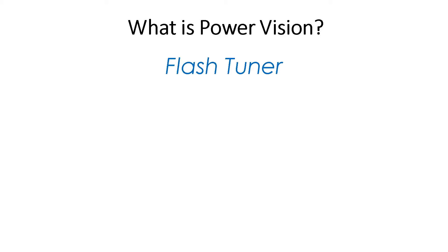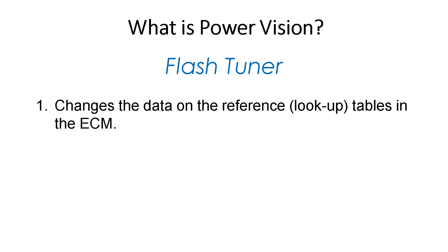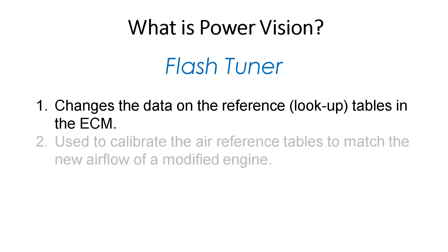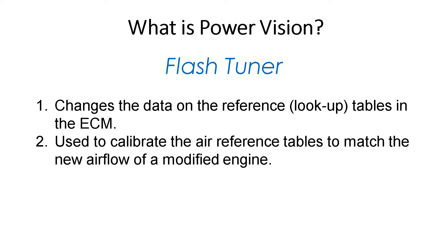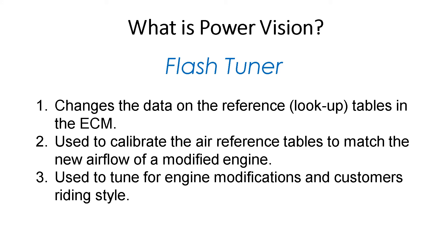What is the Power Vision? It's a flash tuner. A flash tuner allows us to change the data on the reference or lookup tables inside the ECM. The ECM uses these tables to calculate injector pulse width and to calculate the ignition timing. By using and modifying these tables, we can control how the tune of the bike is.